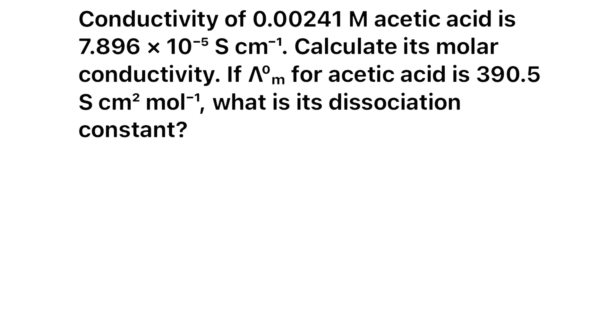See here, which are the given values? They have given the concentration C or M. You can use both. So I am using C here, 0.00241. That is a concentration molarity. Conductivity is given. It is 7.896 into 10 raised to minus 5. Now, limiting molar conductivity is given. Limiting molar conductivity is 390.5 Siemens centimeter square mol inverse.